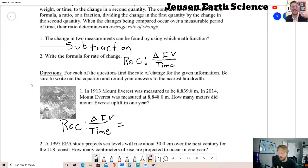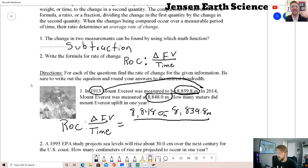Then you want to fill it in with your change in field value and your time. Field value is going to be what's measured. Here it says was measured to be 8,839.8, so that's one of our measurements. Searching the question, we want to find our second measurement, which later in 2014 was 8,848.0 meters. Typically you want to put the larger number first because you're doing subtraction for rate of change. So 8,848.0 minus 8,839.8 meters, and then we want to divide this by the time. Our first time, our original measurement, was 1913.